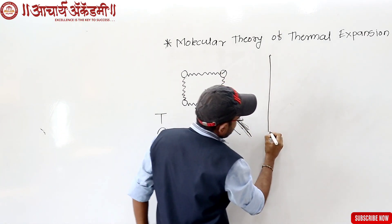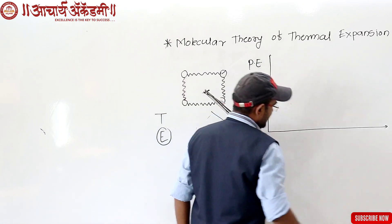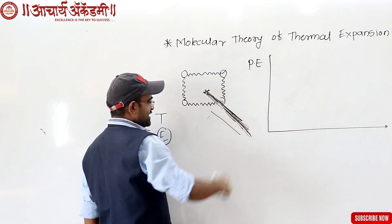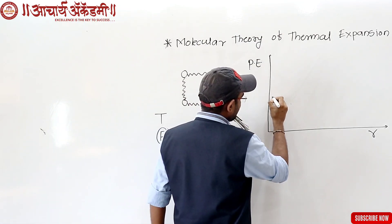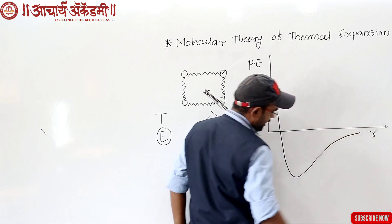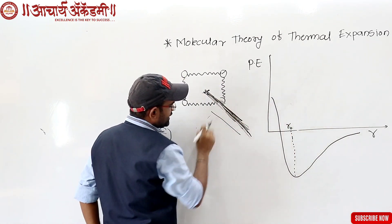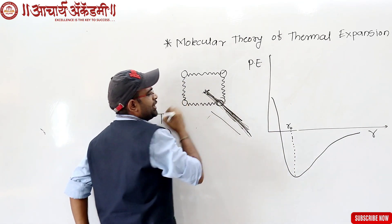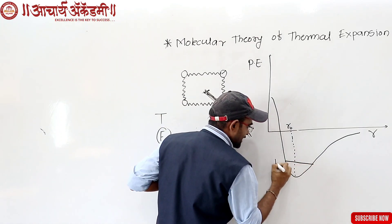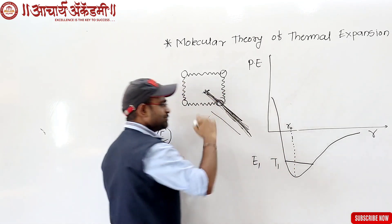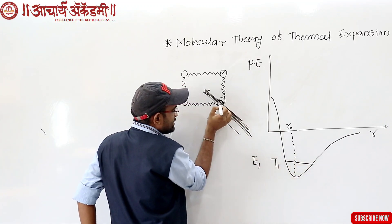A simple basic graph: the graph has two axes — potential energy on the y-axis and displacement on the x-axis. The center of the graph represents the mean position. This graph shows the potential energy versus mean displacement, with the mean position at the center.